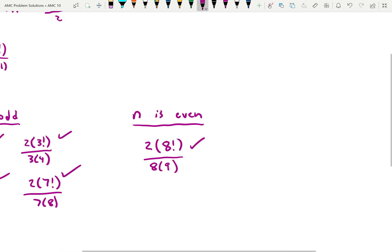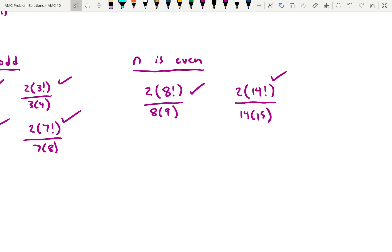And the key here is n plus 1 is composite. And so another one that would work is 2 times 14 factorial over 14 times 15. Because 15 is 5 times 3, that's going to be within 14 factorial. And 14 factorial is divisible by 14. Key there is n plus 1 is composite. So what about when n plus 1 is prime? So within this, when n plus 1 is prime.